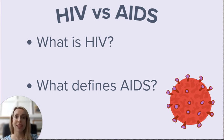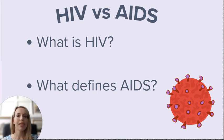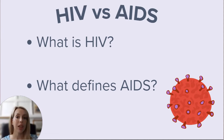Luckily, with advances in modern science, HIV infection is now more so considered a chronic disease rather than the death sentence that it was seen as previously. Now on to AIDS. AIDS is a disease state — the final stage of HIV infection that results from untreated HIV — and this is most commonly defined as a CD4 count less than 200.